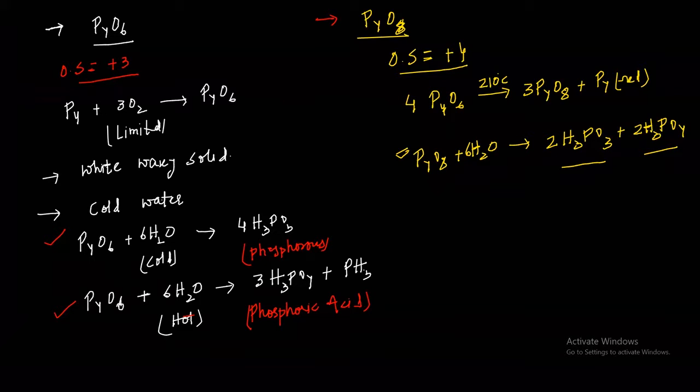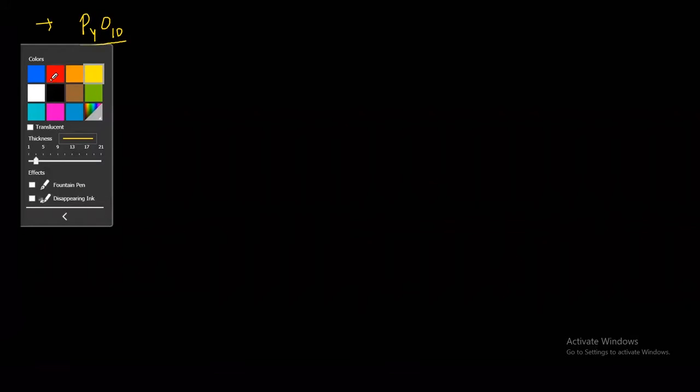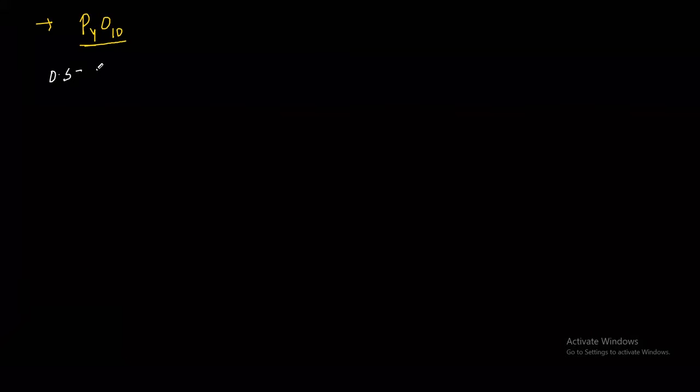Last one we have is phosphorus pentaoxide, P4O10. Oxidation state is plus 5 of phosphorus. It is obtained by heating white phosphorus in excess of air. Limited supply of air gives you P4O6 trioxides. If you have excess supply of air, 5O2 excess, then you end up getting P4O10.